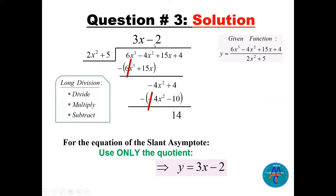Multiplying -2 by the divisor gives -4x^2 - 10. Subtracting again, minus and minus becomes plus, leaving a remainder of 14. We do not use the remainder for the slant asymptote — we use only the quotient. So the equation of the slant or oblique asymptote is y = 3x - 2.